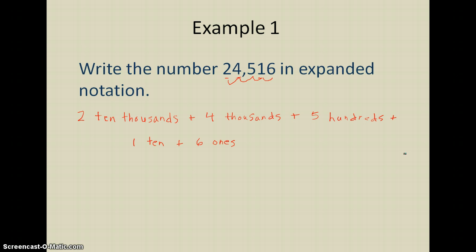And so that's the expanded notation version of this number. If I were to add this all up — 2 ten thousands would be 20,000, plus 4 thousands would be 24,000, plus 5 hundreds would be 24,500, and then if I were to add 6 ones onto that, I'd have 24,516 — that would be the same as the number originally given to me. So that's what expanded notation looks like, and you can see that with really large numbers it's going to get a little bit tedious to write out, but we'll take a look at what one of those will look like.